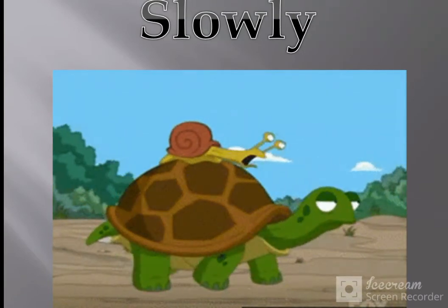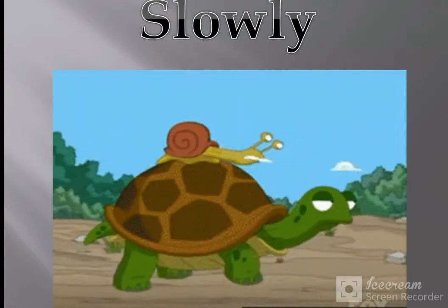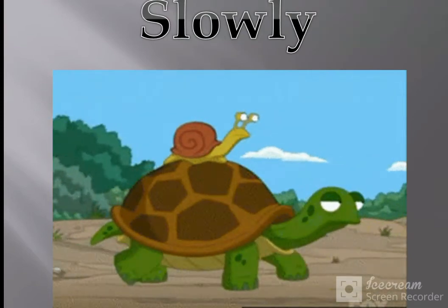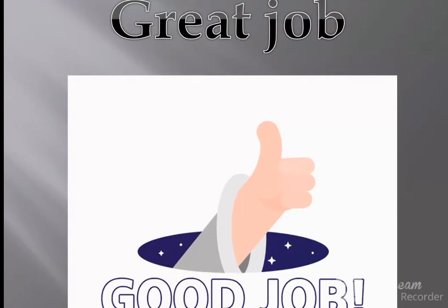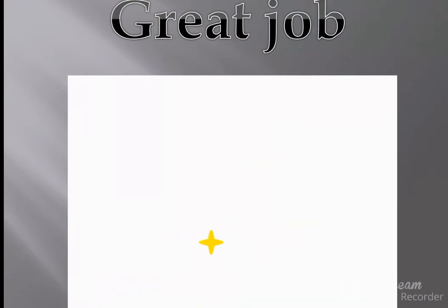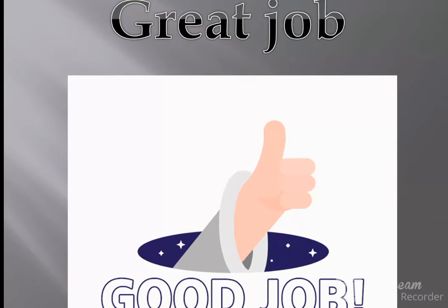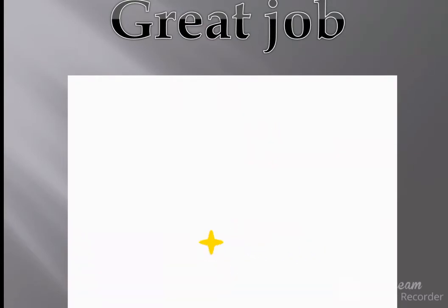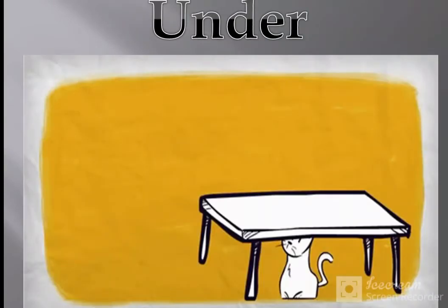Then the teacher will show a picture of a turtle walking slowly and teach the word 'slowly'. Students will perform the action of slowly while saying the word. Next, the teacher will show the 'great job' picture — students say 'great job' while showing their thumbs up.